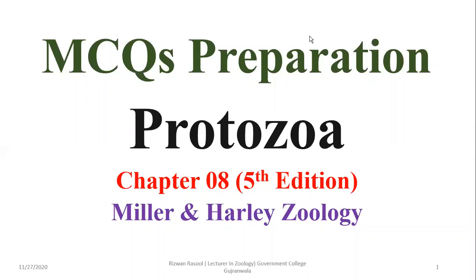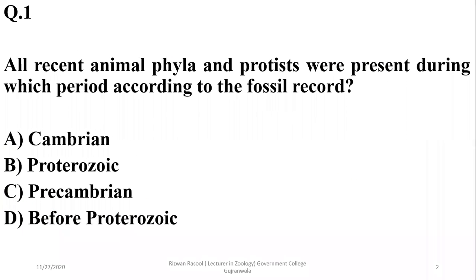The topic of today's lecture is Protozoa. Question one asks: all recent animal phyla and protists were present during which period according to the fossil record? According to the geological time chart, almost all animal phyla as well as protists were found during the Cambrian period. So the correct option is A.